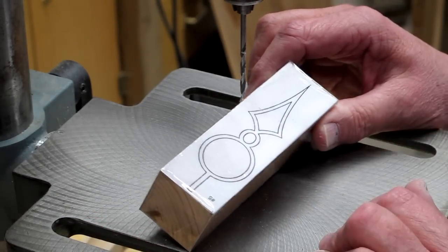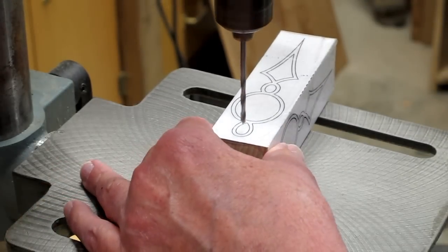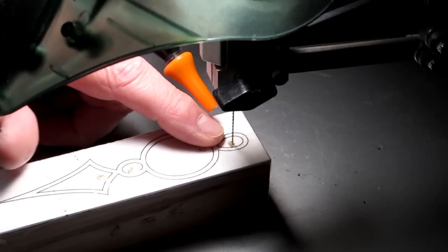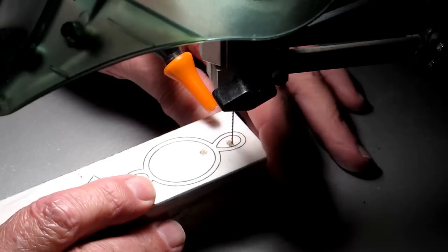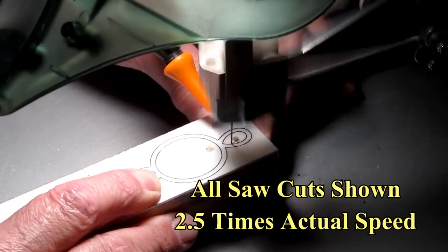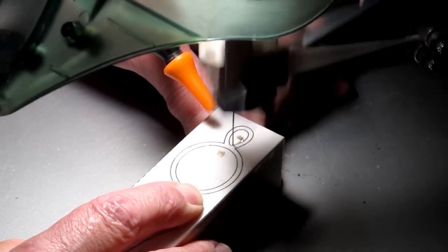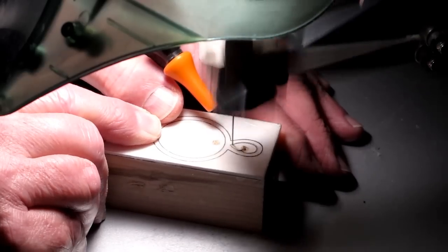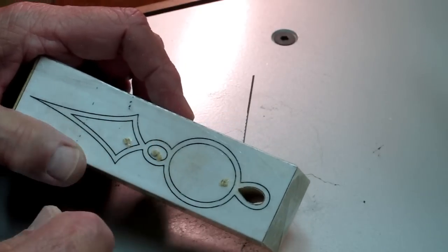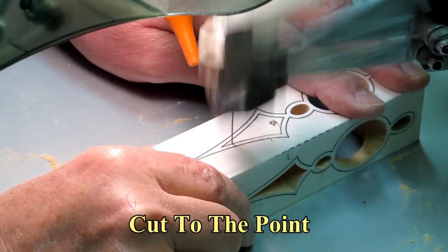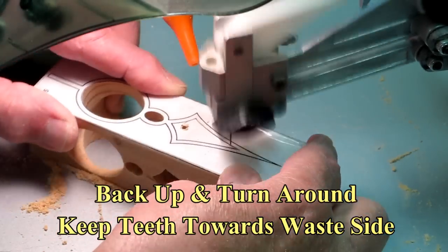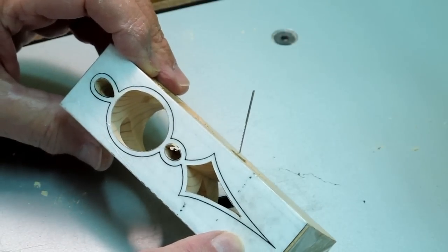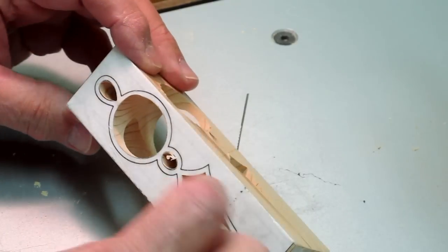Now we're going to drill starting holes for our scroll saw blade. I've inserted the saw blade and we're going to cut out this first opening. I'm going to go ahead and cut out these three and these three openings. So we made the initial cuts and the cross cuts and removed all of that waste material.